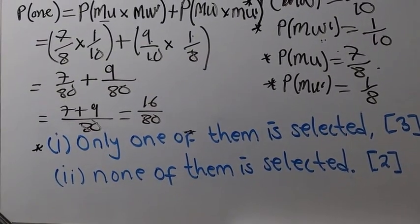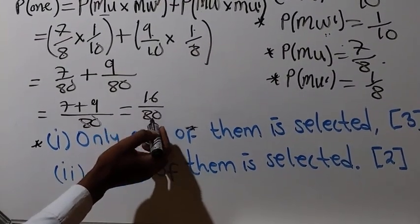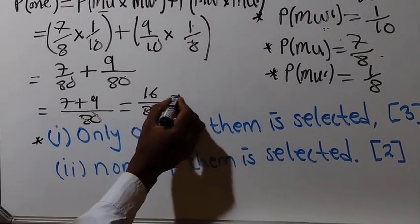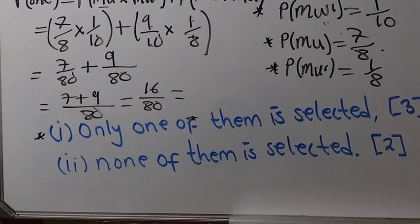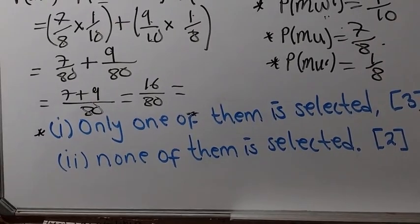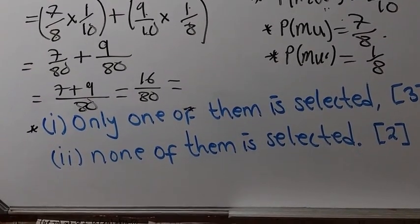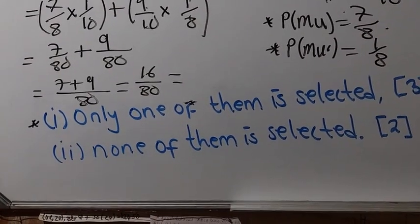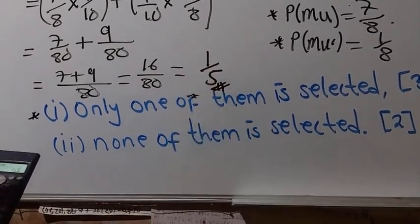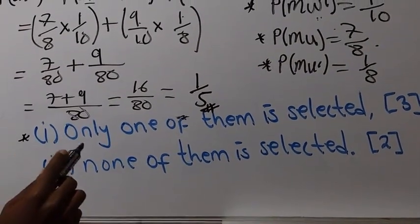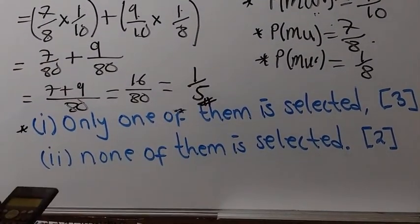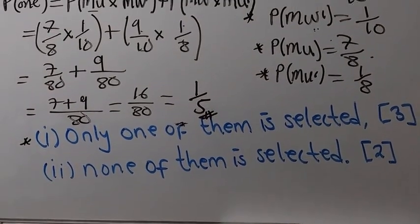We simplify 16 over 80 by dividing both by 16, and our answer is 1 over 5. So the probability of selecting only one of them is 1 over 5. That is the final answer for question one.